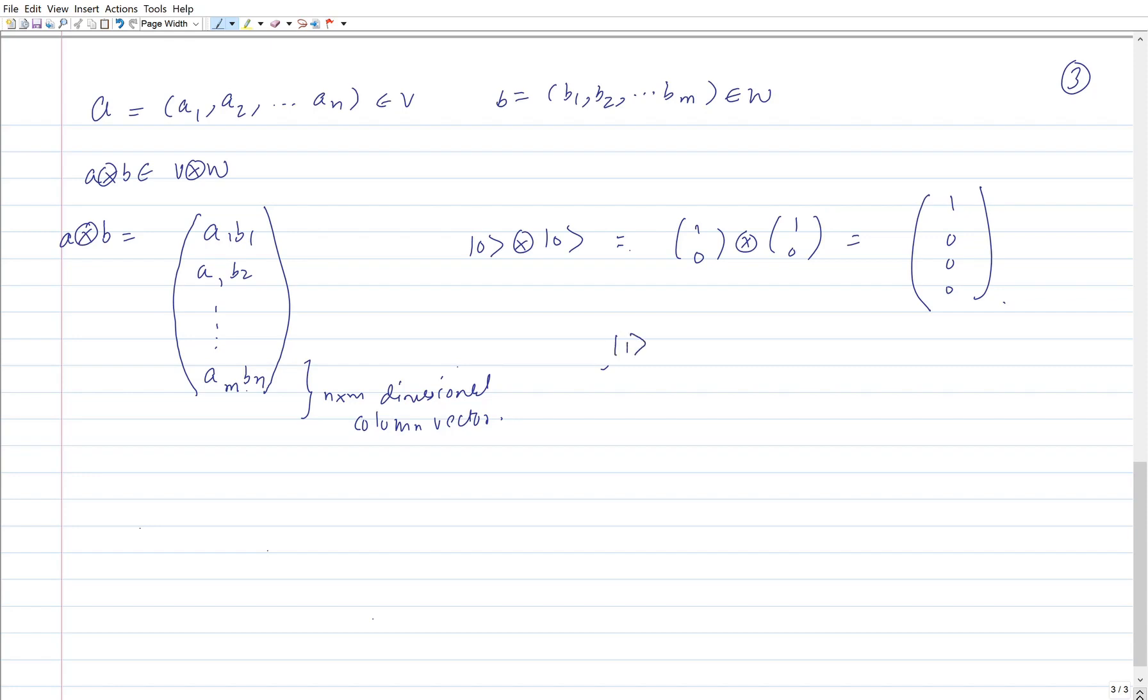Similarly, if I have 1 tensor 0, 1 belongs to B, this vector belongs to W.